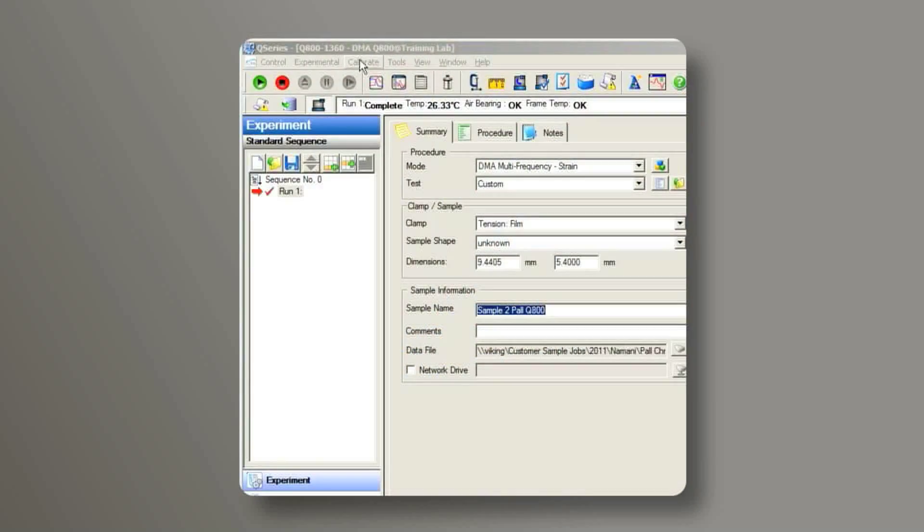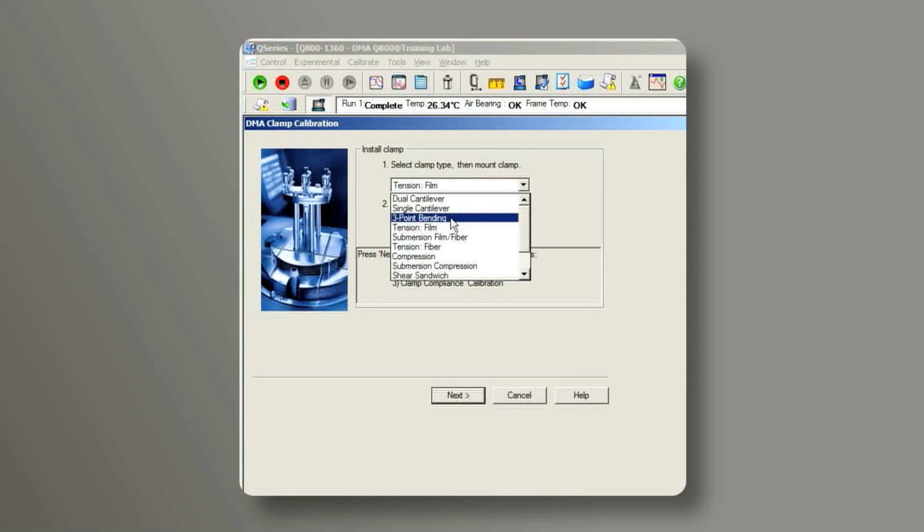From the control software, go to Calibrate Clamp, choose 3-Point Bending, All Calibrations, then Next.